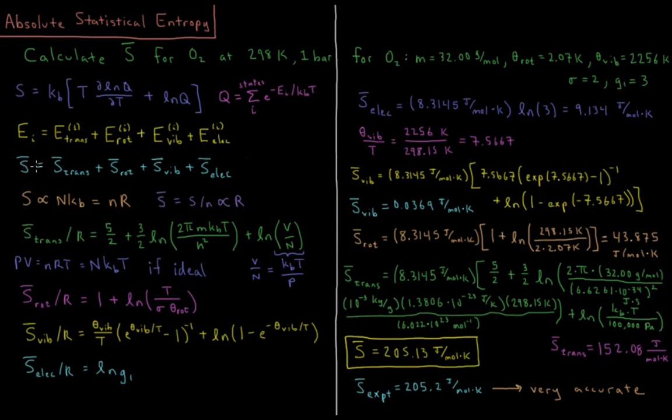So the molar entropy is going to be a sum of the molar entropy of translation, rotation, vibration, and electronic energy levels. So we also see that in virtually every case, the entropy ends up being proportional to the number of particles times the Boltzmann constant. So NK is equal to the number of particles, little n being the number of moles, KB the Boltzmann constant, and R the gas constant. So the molar entropy is equal to the entropy divided by the number of moles, which is going to be proportional to NR over N, which is proportional to the gas constant R. So I'm going to express these all in terms of the molar entropy divided by R, and then we'll throw R back in at the end.